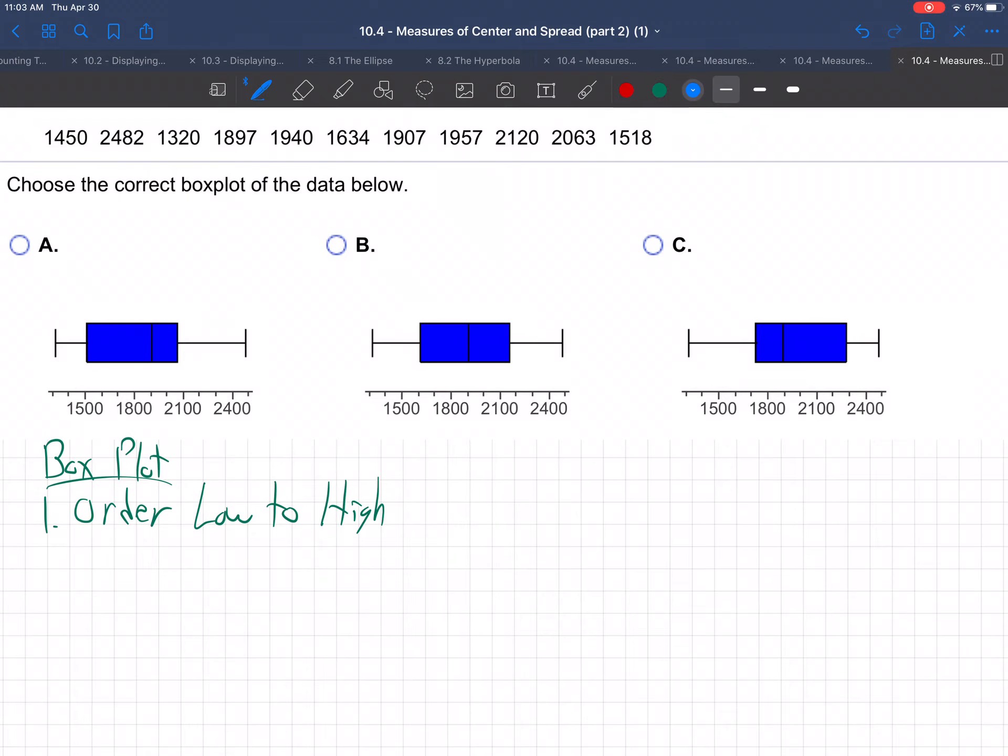So what's the lowest number in the list? Let me see, 1320, followed by 1518, I think. 1320, 1518. What comes next? Is it 1450? Oh wait, no, I got that backwards, don't I? So 1450 should come first, before 1518, right? Am I missing any? And then 1634. Okay, what else we got? 1897, 1907, 1957.